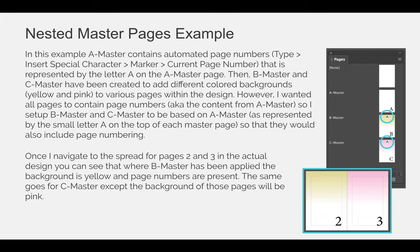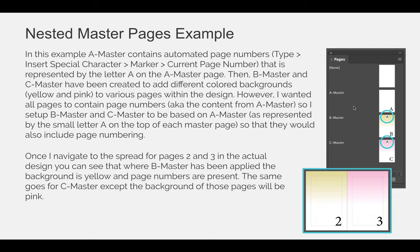In this example, A Master contains automatic page numbers, represented by the capital letter A in the bottom right-hand corner of the screenshot. Notice there are two different A's — the ones that are circled are the same A you would see on regular pages indicating which Master Page they're based on. In this case, Master B and Master C are based on Master A. The capital letter A in the bottom right-hand corner of Master A actually represents automatic page numbering. Because we're on a Master Page, it doesn't have a page number, so it just says A for A Master. To insert automatic page numbering, go to the Type menu, choose Insert Special Character, then Marker, then Current Page Number.